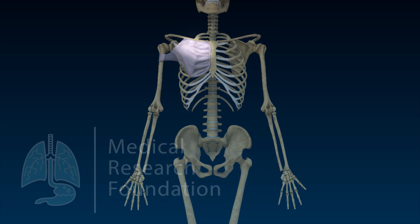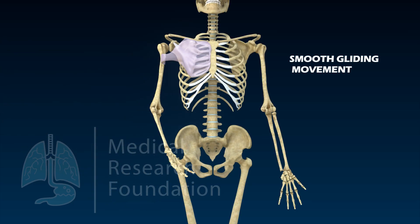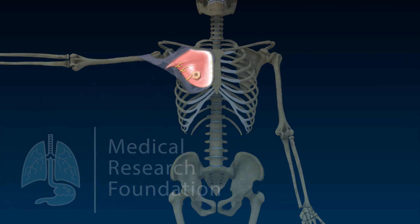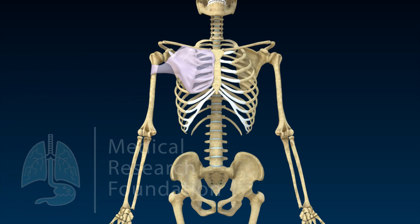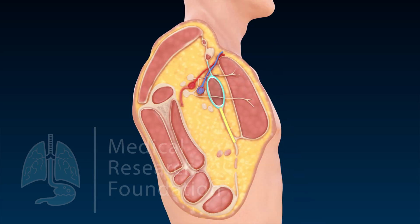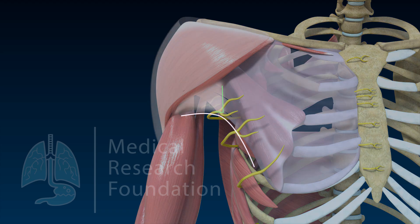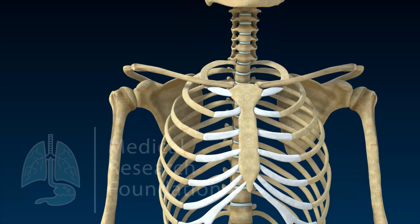The main function of the clavipectoral fascia is to allow smooth gliding movements of adjacent structures over each other — specifically, it allows the gliding of pectoralis major over pectoralis minor. The suspensory ligament of the axilla maintains the concavity of the armpit by suspending the axillary fascia from above.